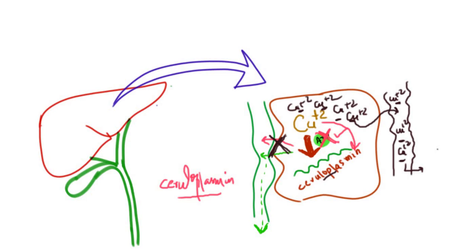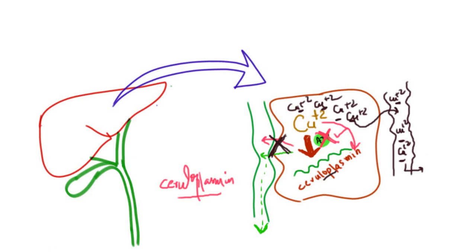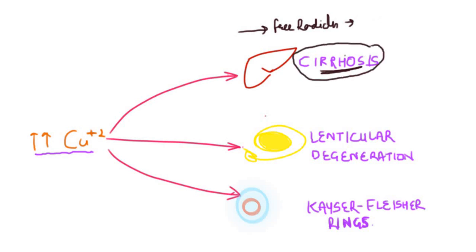The clinical features of this disease are basically due to increased copper in the blood, which deposits in and destroys various tissues within the body. The first clinical feature is liver cirrhosis. Excessive copper accumulation within the hepatocytes leads to production of free radicals, which damage the hepatocytes and ultimately most of the liver, resulting in end-stage liver disease — cirrhosis.